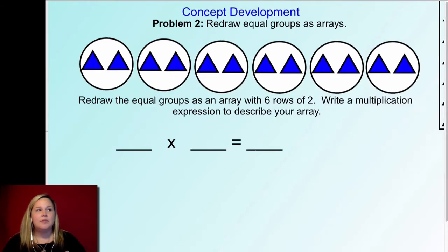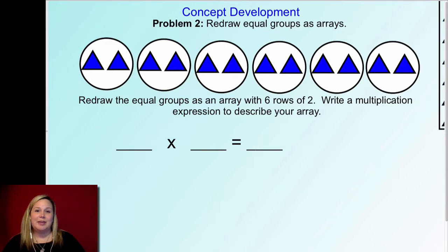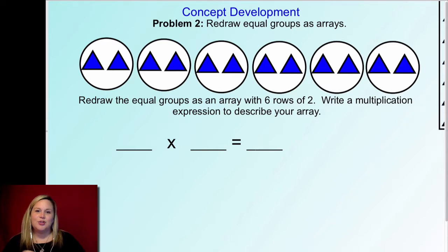This one: I want you to redraw the equal groups as an array with six rows of two. Go ahead and draw six rows — remember, side to side — with two in each row. Then write a multiplication expression that matches that. Pause, do your work, solve it on your dry erase board. When you're ready, click play and we'll talk about it together.